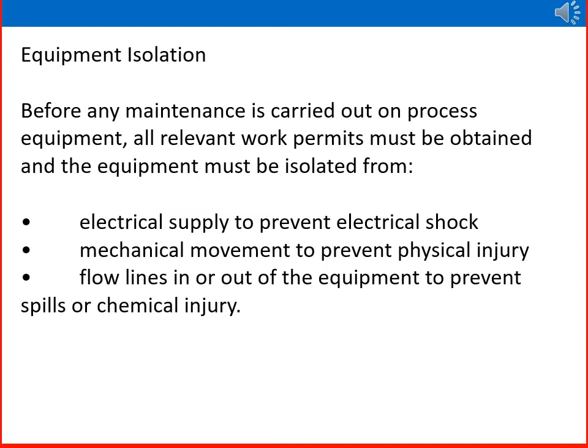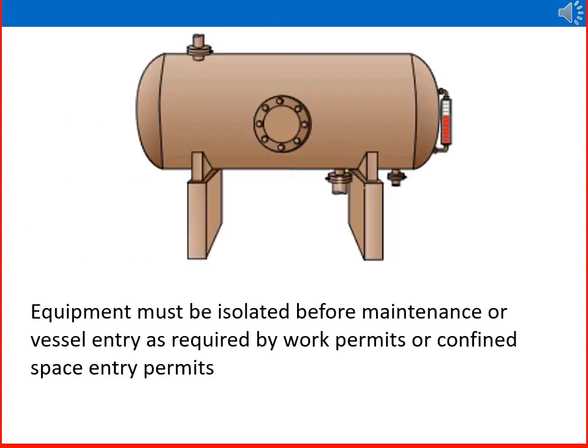Before any maintenance is carried out on process equipment, all relevant work permits must be obtained and the following must be isolated: electrical supply, to prevent electrical shock or hazard; mechanical movement, to prevent physical injury; and flow lanes in or out of the equipment, to prevent spills or chemical injury. Equipment must be isolated before maintenance or vessel entry as required by work permits or confined space entry permits.